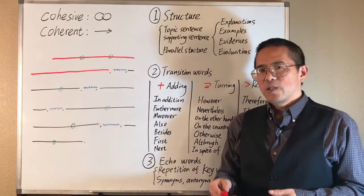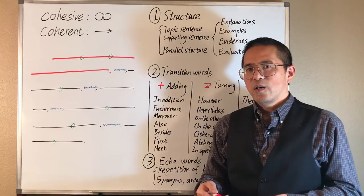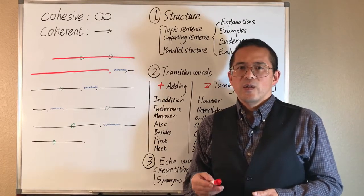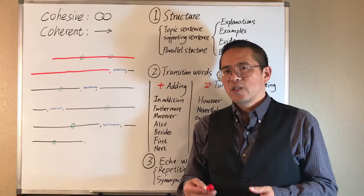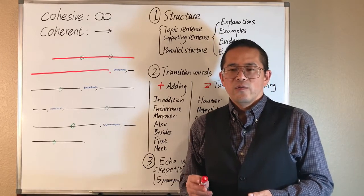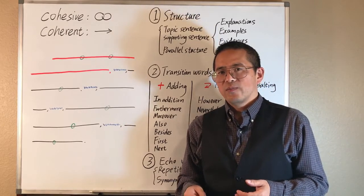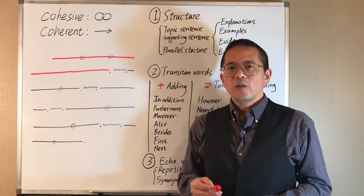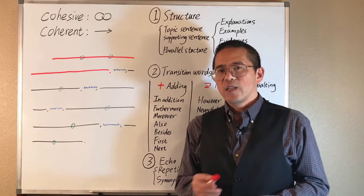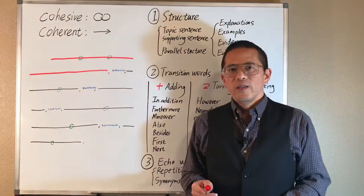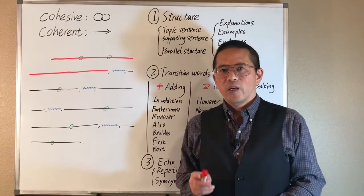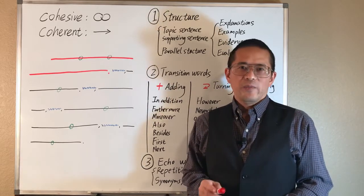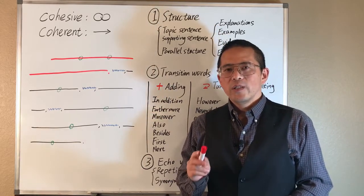Finally, we should keep some variations in the length and structure of sentences. Too many simple sentences make our paragraph sound choppy and sturdy. Variations will make our paragraph sound better and make the reading more enjoyable. How to achieve sentence variety is another topic for better writing. Today, we talked about how to develop a coherent paragraph. In fact, the basic principles are the same as how to develop a coherent full article.